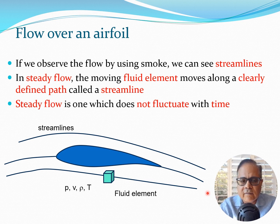We will typically assume that you have steady flow, which means that the flow has a clearly defined path along a streamline. Whenever we talk about steady flow, it means that the flow does not fluctuate with time. Essentially, at different points of time, if we were to take snapshots of the flow, they would be similar.